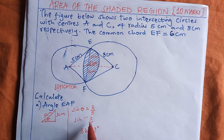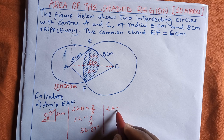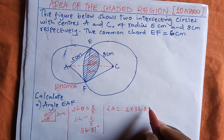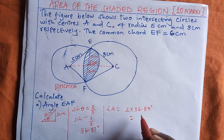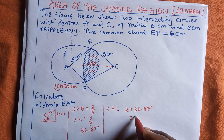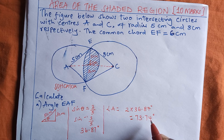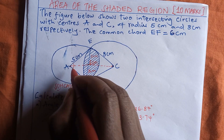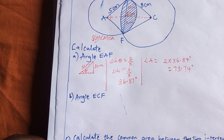But remember, this is only half of angle A. So angle A equals two times 36.87 degrees, which gives us 73.74 degrees. That is angle EAF.